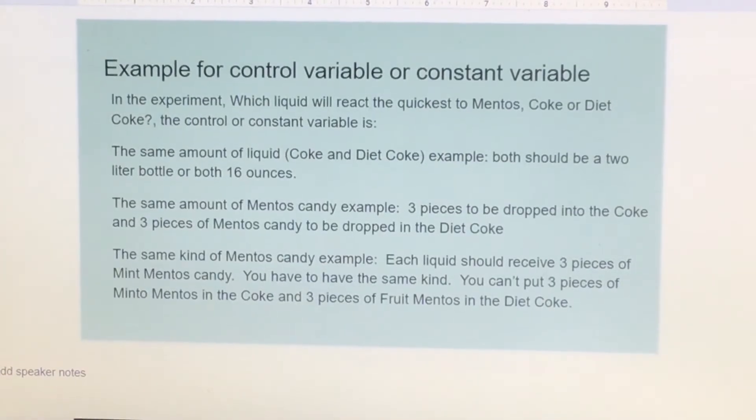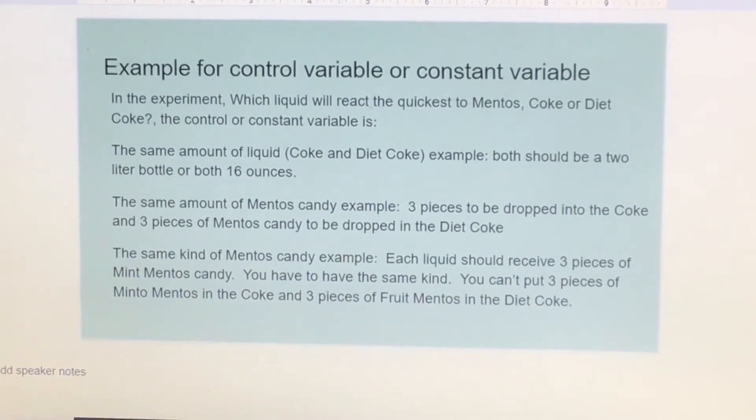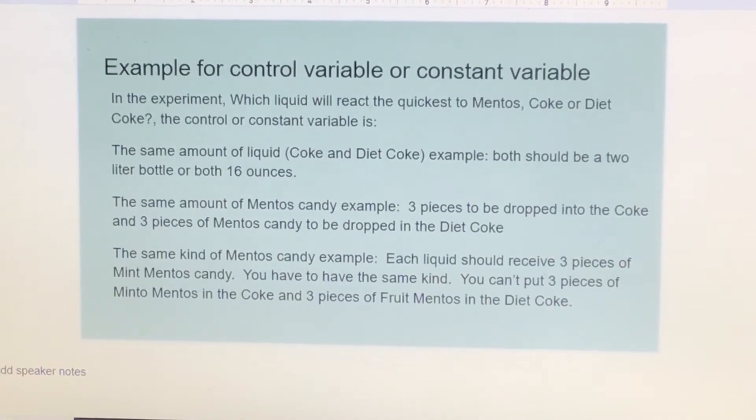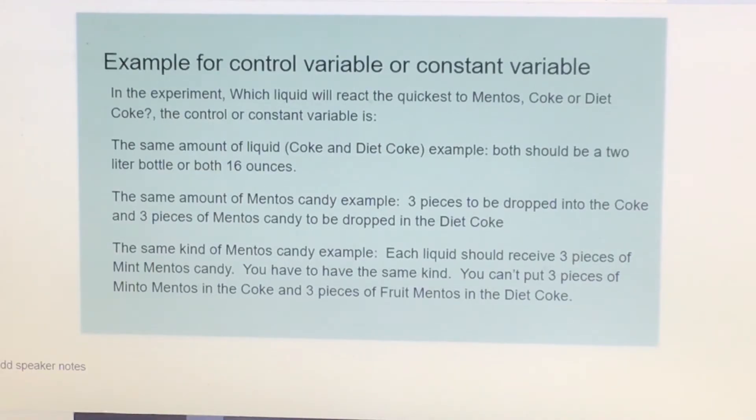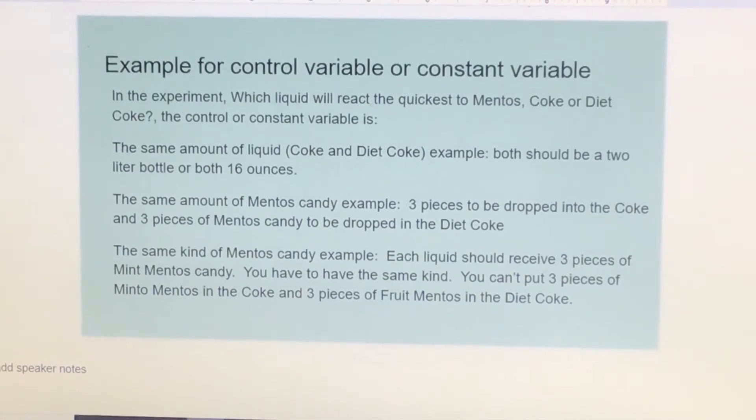An example of the control variable or constant variable: in our experiment which liquid reacts the quickest to Mentos, Coke or Diet Coke, the control or constant variable is the same amount of liquid for Coke and Diet Coke. Both should be a two-liter bottle or both 16 ounces. The same amount of Mentos candy, for example, three pieces to be dropped into the Coke and three pieces of Mentos dropped into the Diet Coke.